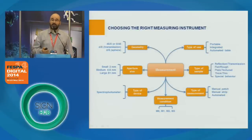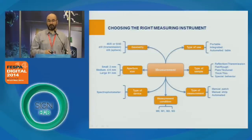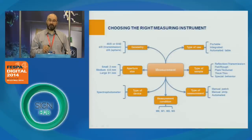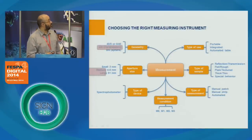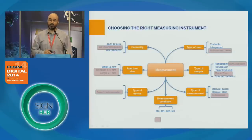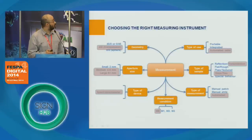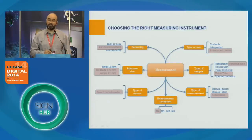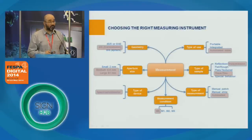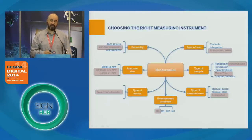Any metrological protocol starts with choosing the right measuring devices. Looking at the characteristics required by a measuring protocol, we need the D0 geometry because this is the geometry used for transmission measurement. We need medium to larger apertures — smaller apertures are not sufficient for backlit applications. Of course we need a spectrophotometer, and current D0 spectrophotometers are equivalent to M0. Because measurements in transmission mode are usually slow, we need an automated device.